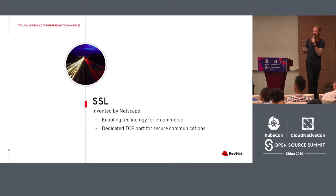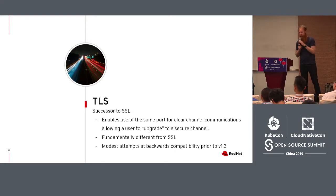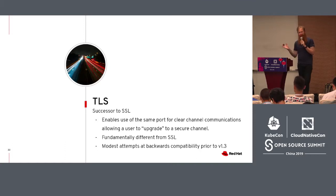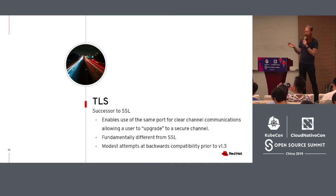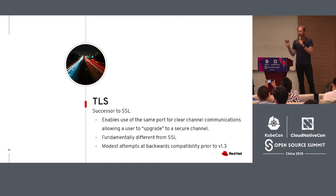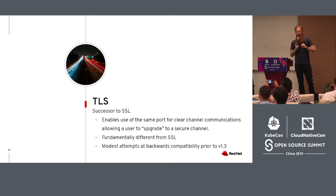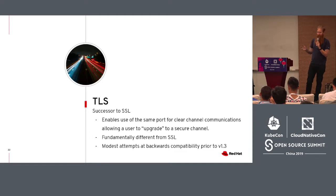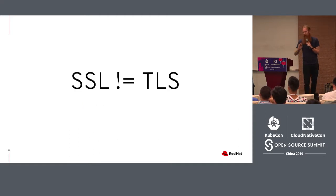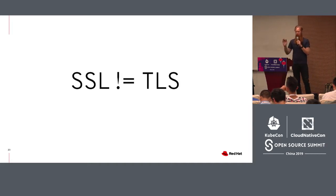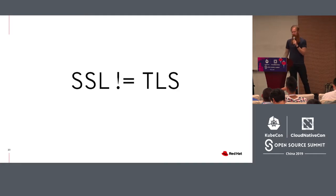In the 1990s, Netscape brought us SSL — Secure Socket Layers. The intention was actually just to make consumers comfortable with using their credit card on the actual internet. Then after that we end up with TLS. The successor to SSL was TLS, or Transport Layer Security. While TLS made modest attempts at being backwards compatible prior to TLS version 1.3, it was fundamentally different technology. One of the most important differences is that all operations, both clear and protected in TLS, happen over a single port, and that connection upgrades to secure communications.